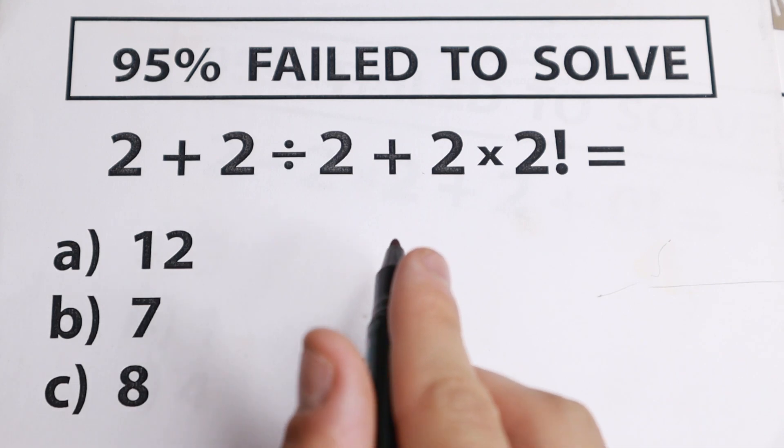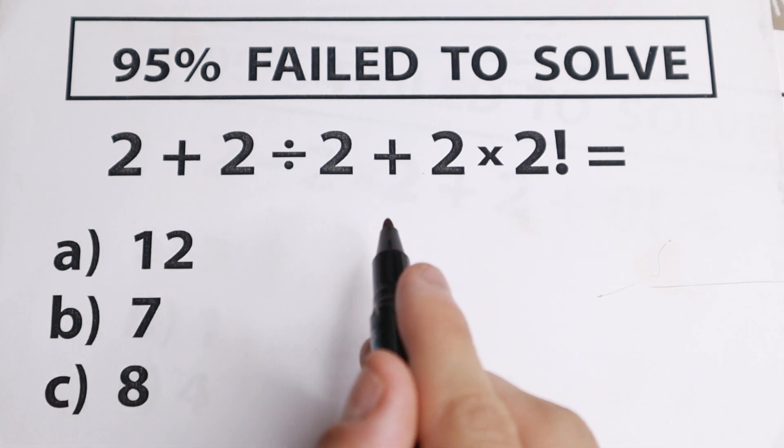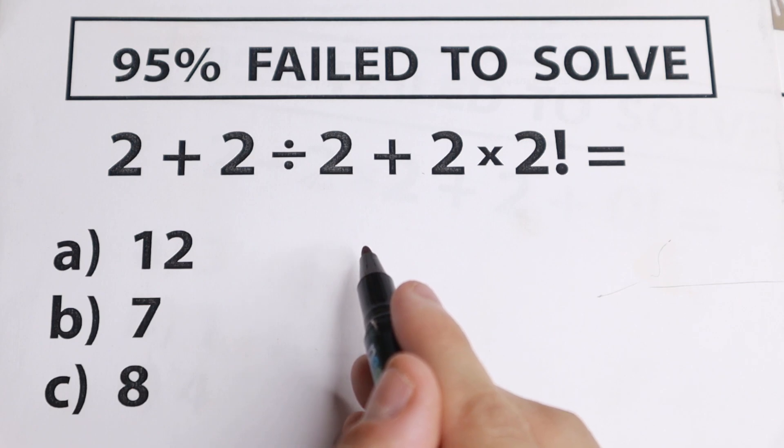We need to solve this interesting problem. We have 2 plus 2 dividing by 2 and plus 2 times 2 factorial. A lot of students fail to solve this interesting problem and I want to show you how to solve this problem correctly.